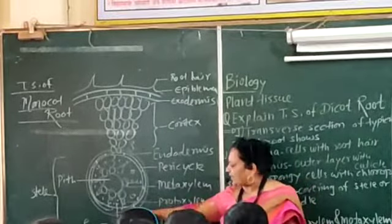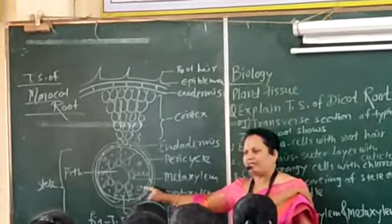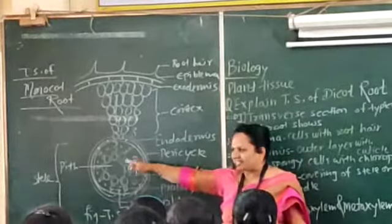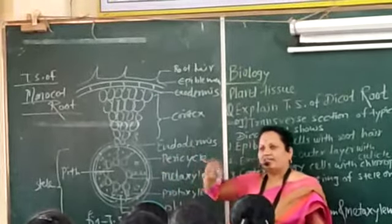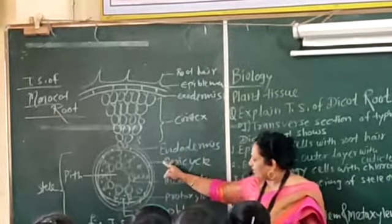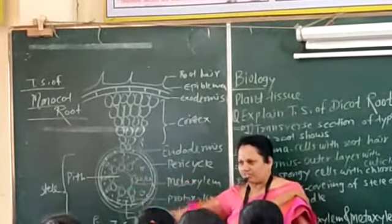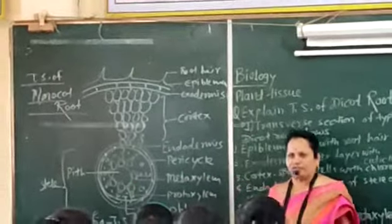And in between the xylem, pith is present. But number of these vascular bundles are more, arranged in a radius. And it consists of large pith. This is all about T.S. of monocot root.